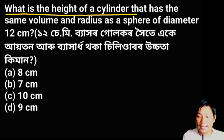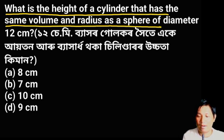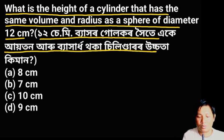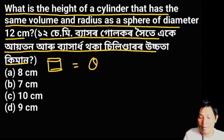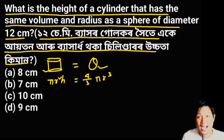What is the height of a cylinder that has the same volume and radius as a sphere of diameter 12 cm? The cylinder's volume is π r squared h. The sphere's volume is 4/3 π r cubed. The radius is the same for both, using small r.